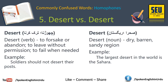دوسرا desert بطور noun مطلب ہے صحرا یا ریگستان — a dry, barren, sandy region۔ Dry یعنی خشک، barren یعنی بنجر اور بیکار۔ For example: The Sahara — دنیا کا سب سے بڑا desert صحارا ہے۔ اس کے علاوہ ایک bonus word — dessert (d-e-s-s-e-r-t، دو s کے ساتھ) جو میٹھے کھانے کو کہتے ہیں، یہ بھی ان سے ملتا جلتا word ہے۔